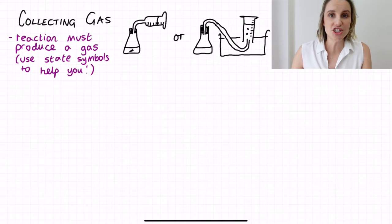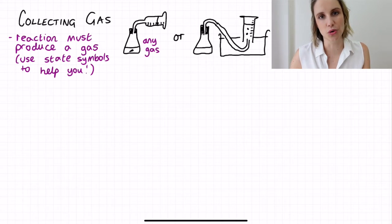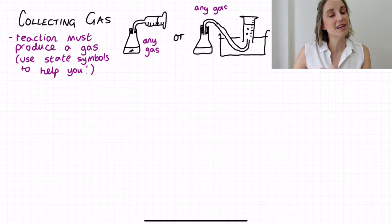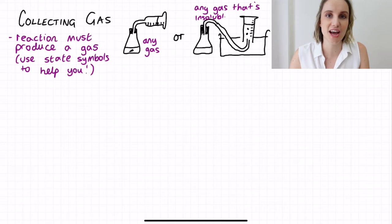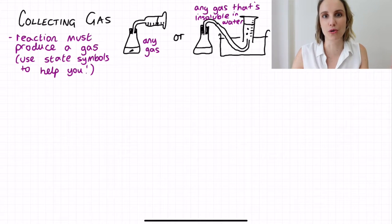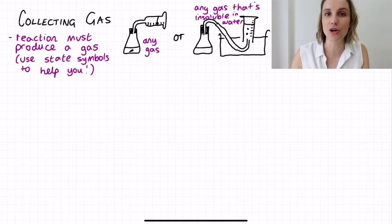For the gas syringe it can be producing any gas at all, but for the displacement of water you really need to check that your gas isn't soluble in water, otherwise it's going to dissolve in the water and that won't help you to measure it. So be careful about gases like ammonia or oxygen that are pretty soluble in water.